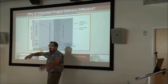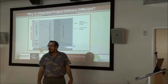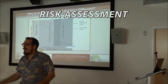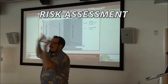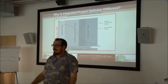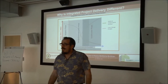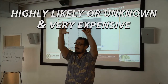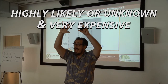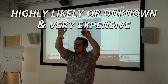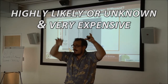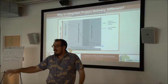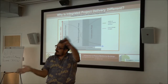One of the things we do in a relational contract is we start at the beginning with a risk assessment. We form a chart and everybody brainstorms anything possible that could go wrong. Then we rate them on likelihood and cost. The stuff that's highly likely or unknown and very expensive are real risks. The ones that are very unlikely and not too expensive — really, they're not that big a deal. Everything in the middle is in that continuum.